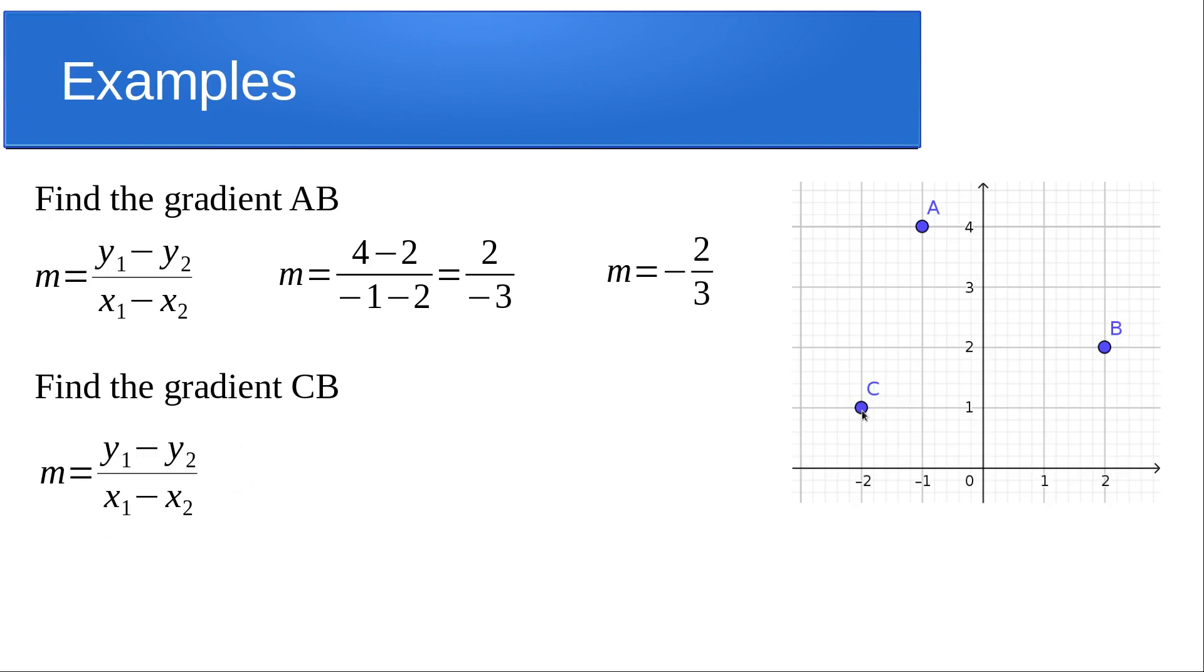So it's going to be the Y value of C which is 1 minus the Y value of B which is 2. And then that's going to be over the X value of C which is -2 minus the X value of B which is 2. And that's going to give us 1 minus 2 which is -1. -2 minus 2 is -4. And obviously the minuses cancel out to give us 1/4. So M equals a quarter.